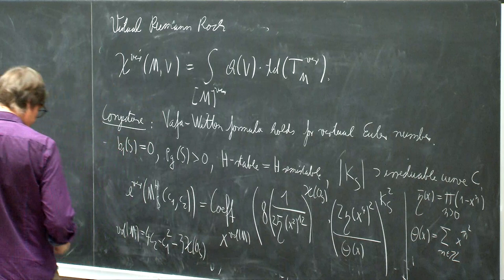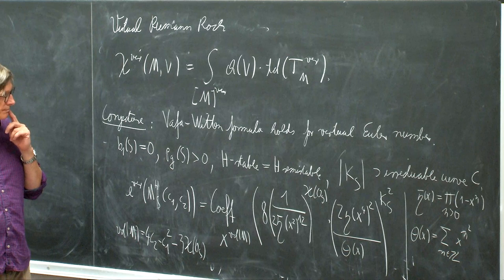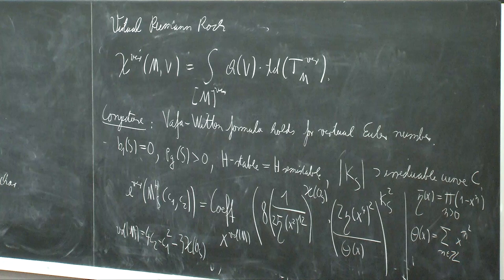The theta function is just the sum over all n in the integers of x to n squared — a standard Jacobi theta function. The virtual dimension of this moduli space is 4C2 minus C1 squared minus 3 times the holomorphic Euler characteristic.